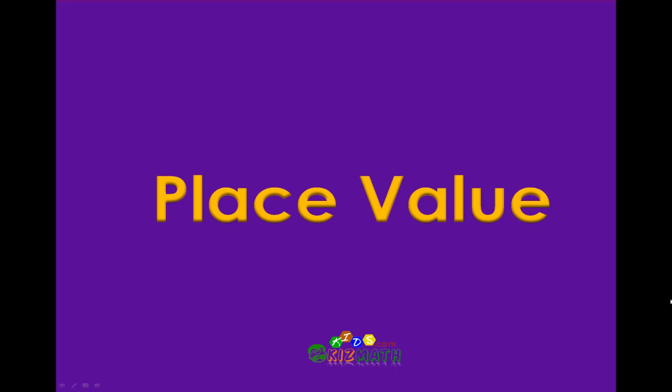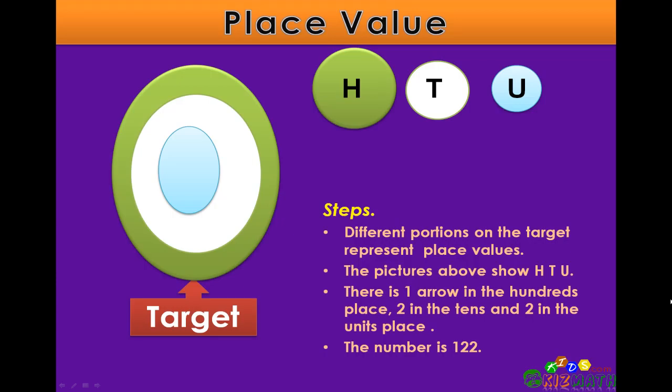Today we're going to look at place value. Here we have a target. Each area of the target represents a different value: the green stands for hundreds, the white stands for tens, and the blue stands for units.